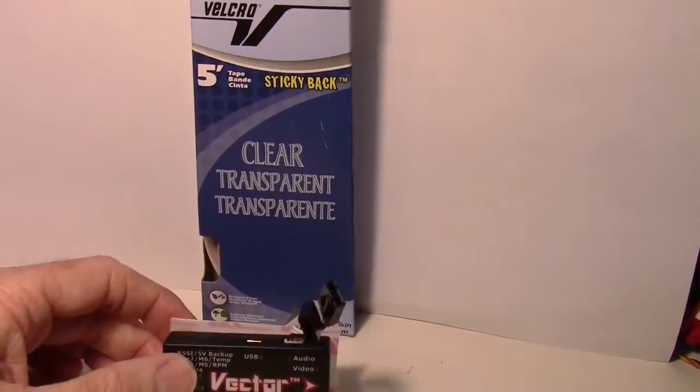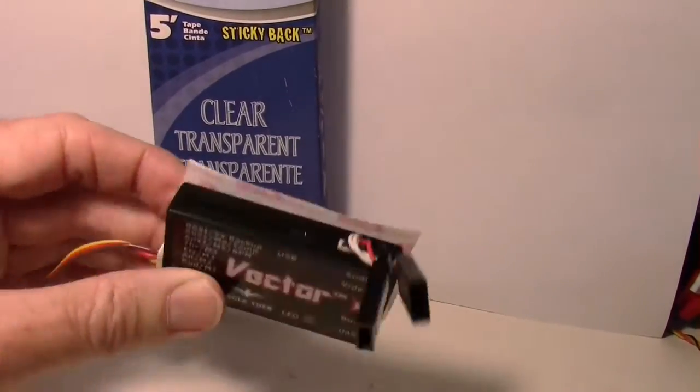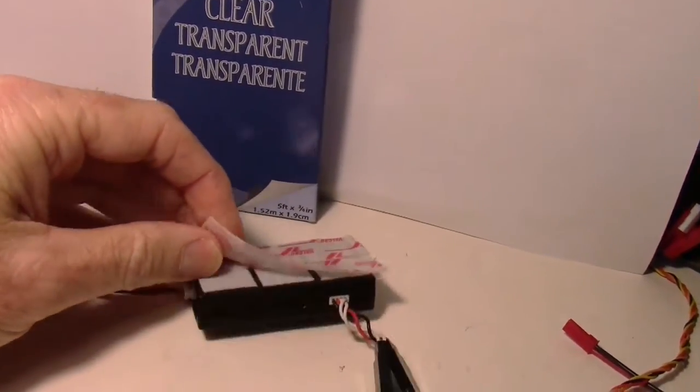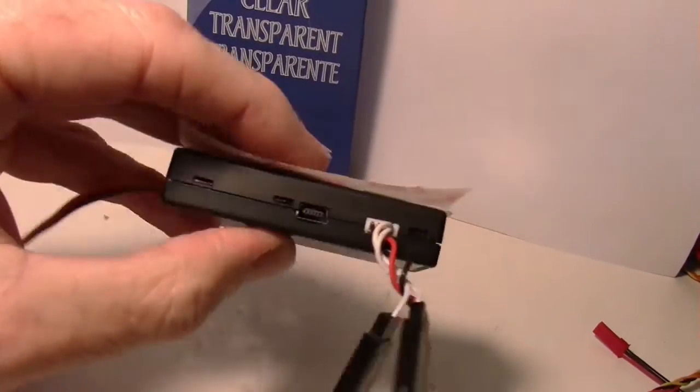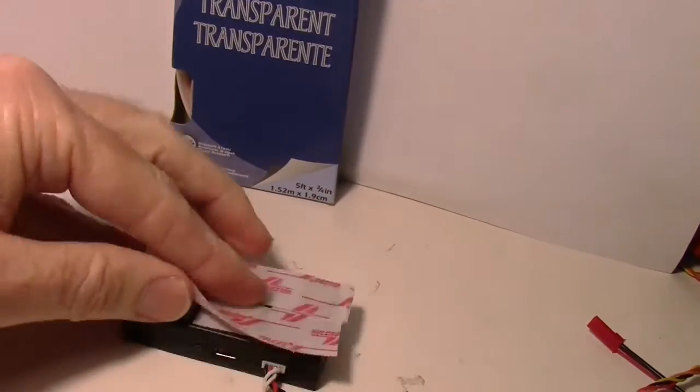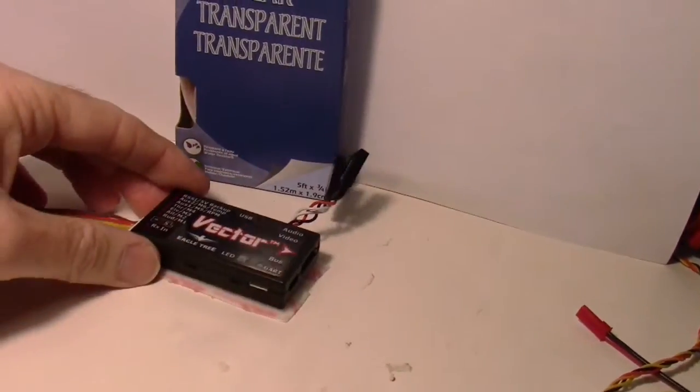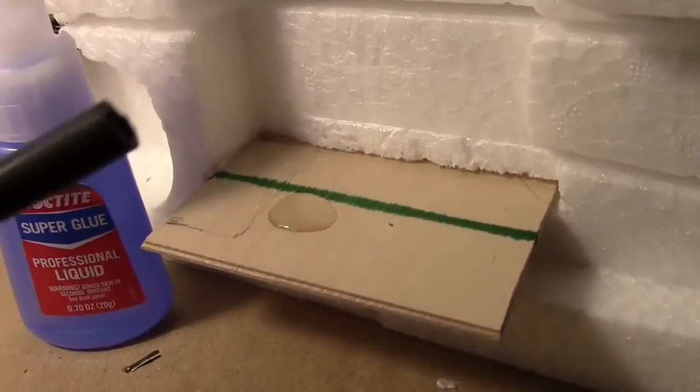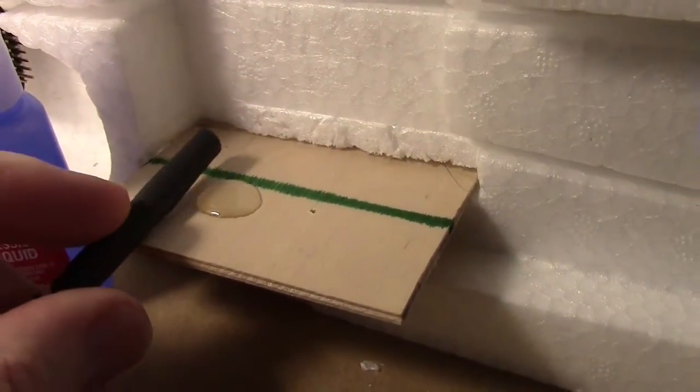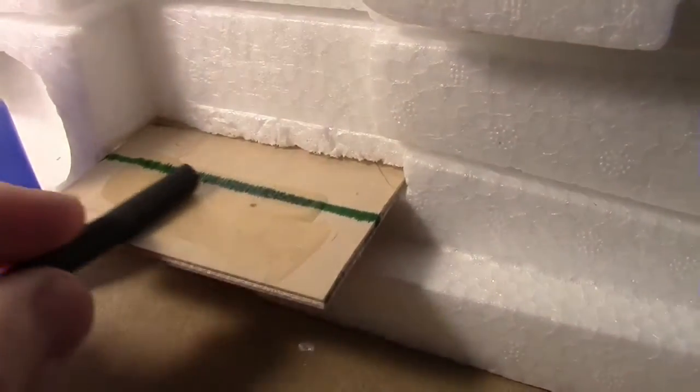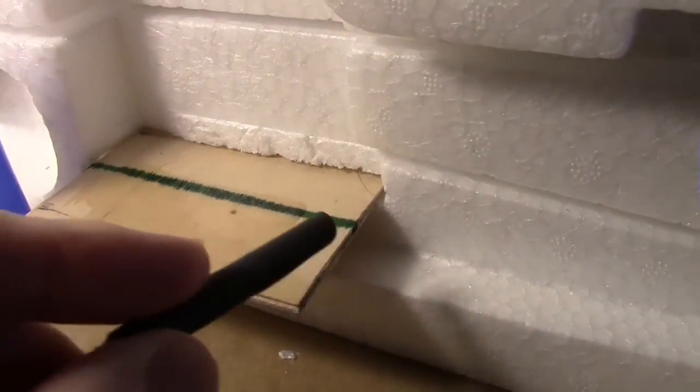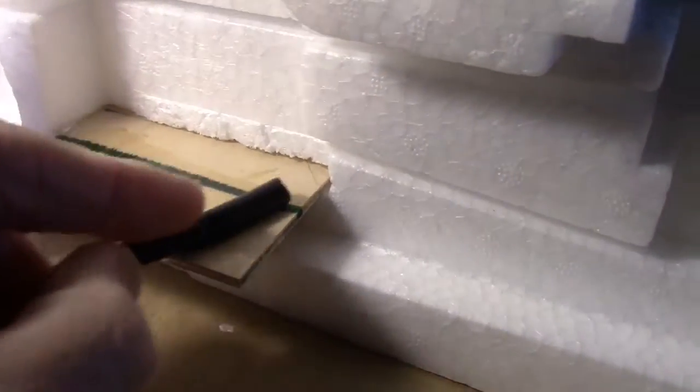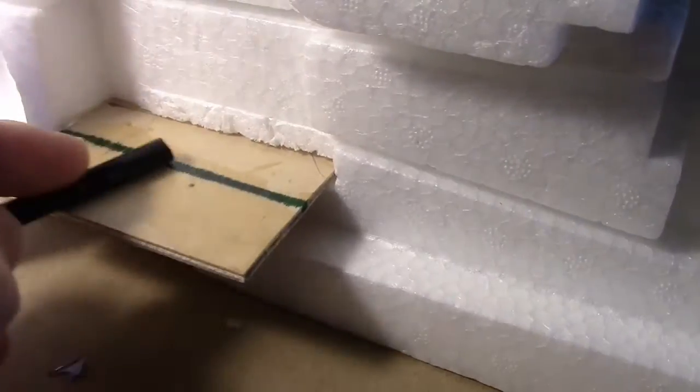I'm going to use some of this clear, thin, transparent velcro to hold the vector down. This stuff's really thin so it won't let the vector wiggle. I'm going to mount it onto its plywood backing. I'm just using a little bit of super glue and a piece of rubber hose to spread the super glue out onto this board. That'll help the velcro stick to the wood. This seals up the pores in the wood and makes it so the velcro can really stick to it.